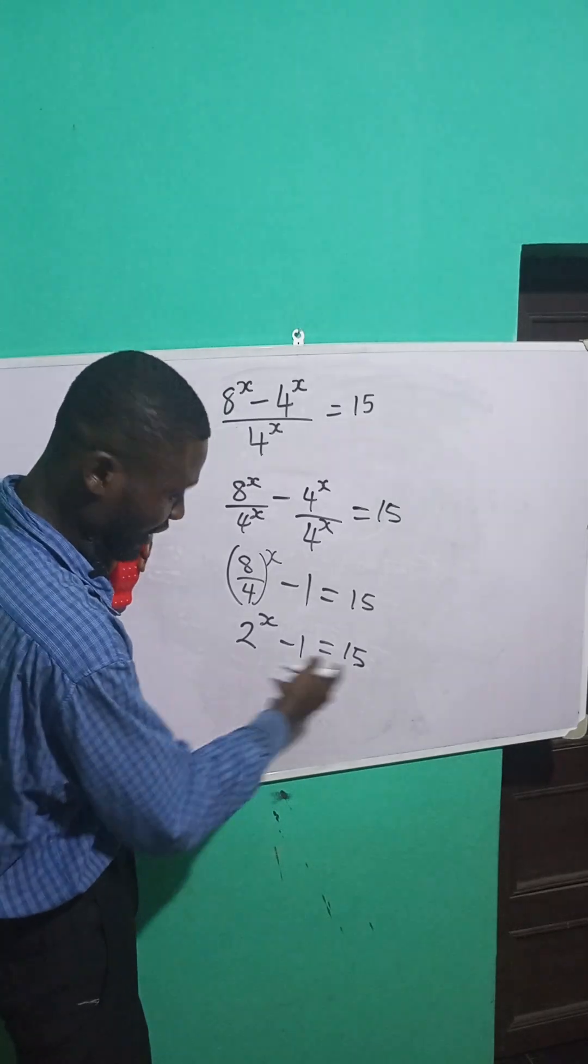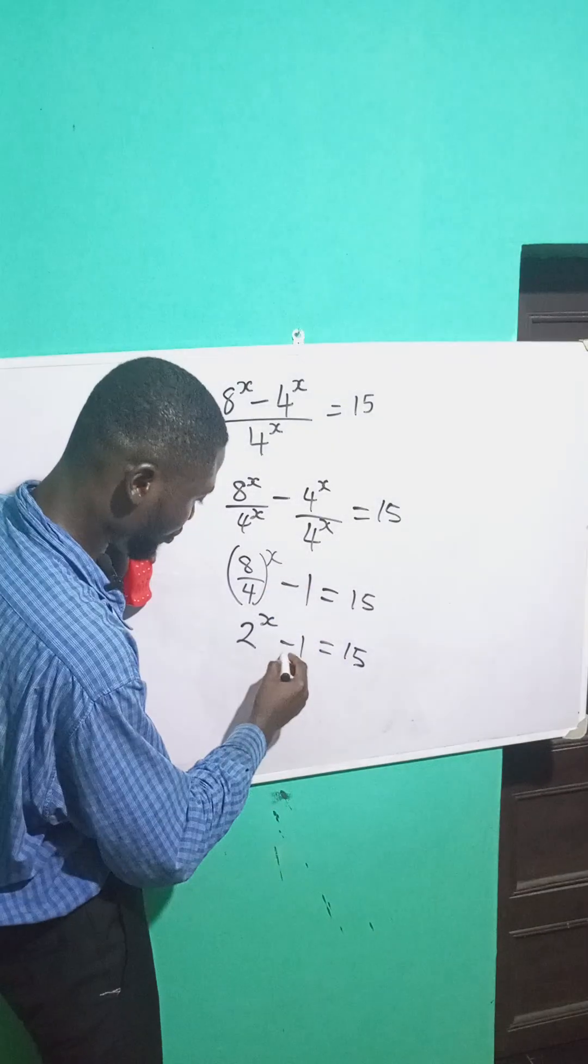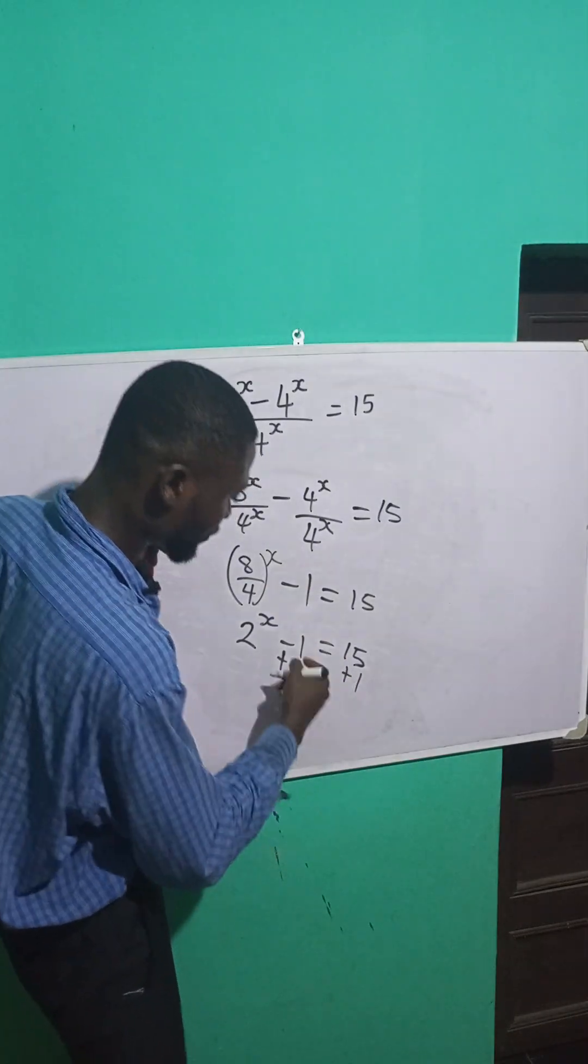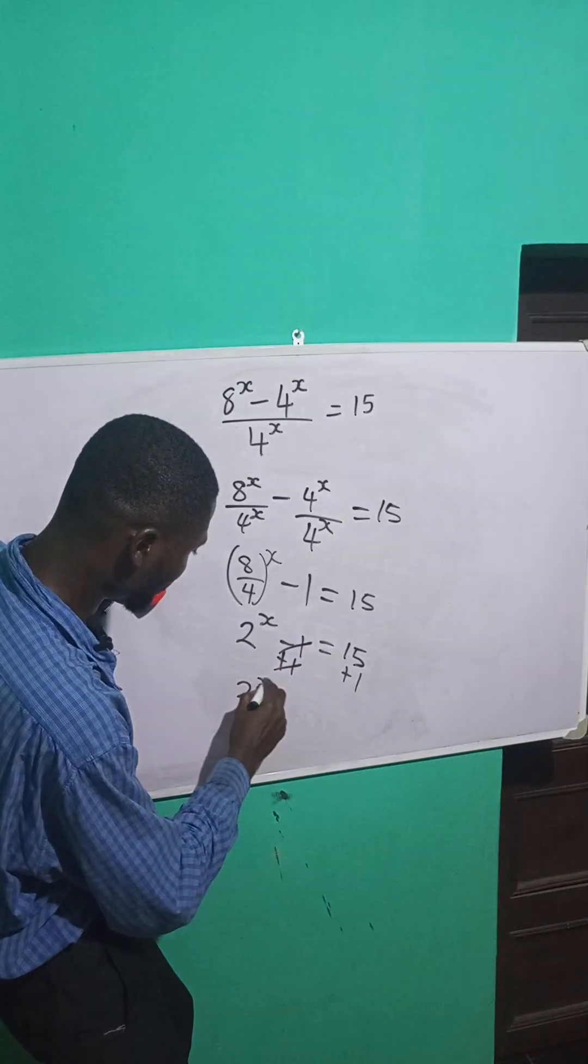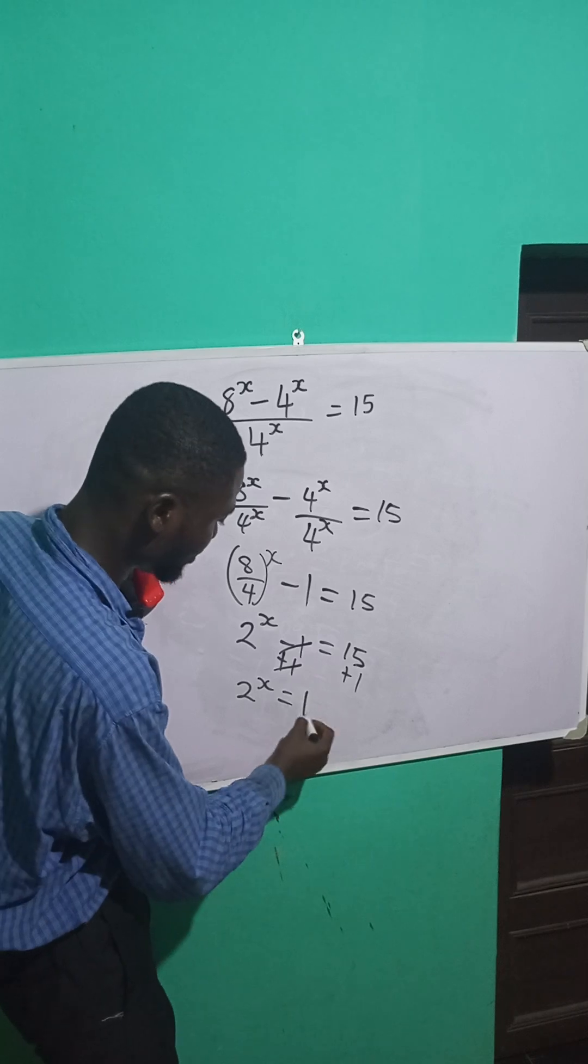To eliminate minus 1, I'll take the inverse by adding 1 to both sides. The inverse of minus 1 is plus 1. Minus 1 and plus 1 cancel, right? So 2 raised to power x equals 15 plus 1, which is 16.